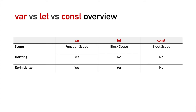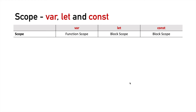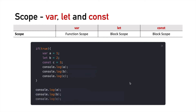Now let's understand these differences one by one in detail. In terms of scope, var has functional scope whereas let and const have block scope. Let's verify this with an example. We'll declare an if block and within it create three variables: variable 'a' using var assigned value 1, variable 'b' using let assigned value 2, and variable 'c' using const assigned value 3. Now within this if block, we log the value of each variable. When we execute this, the first console log gives 1, the second gives 2, and the third gives 3, meaning all of a, b, and c are accessible within the if block.